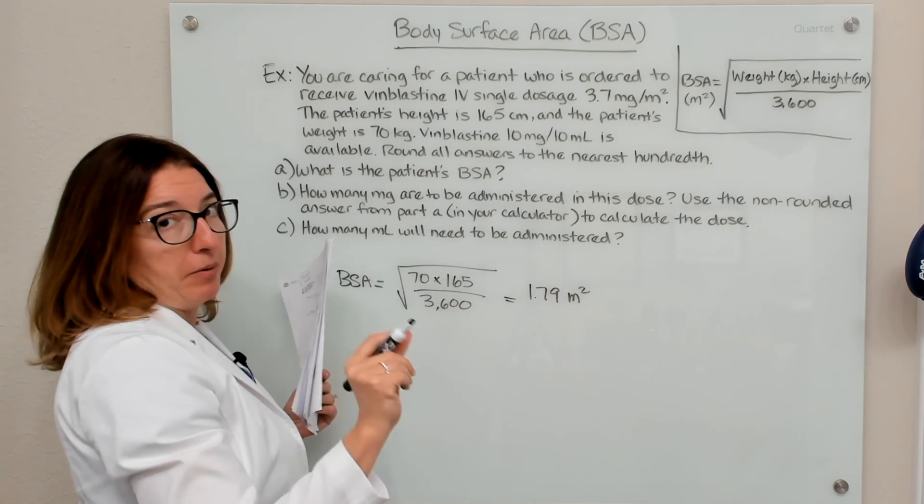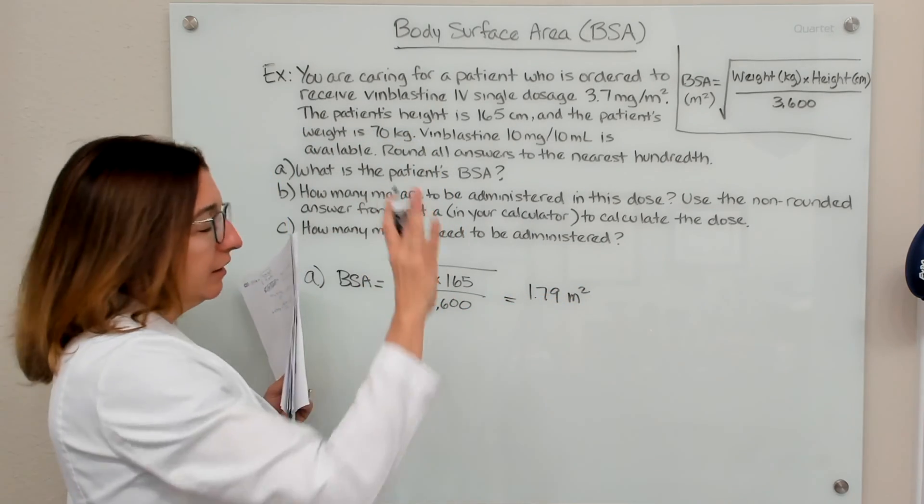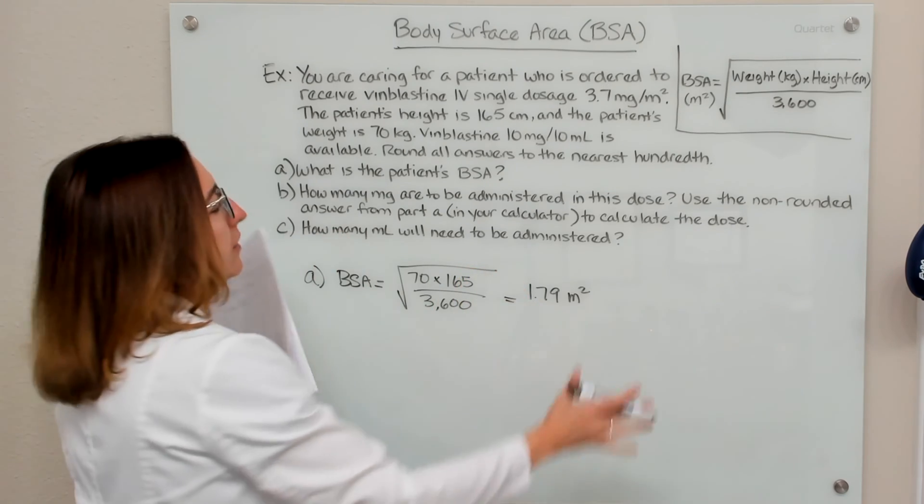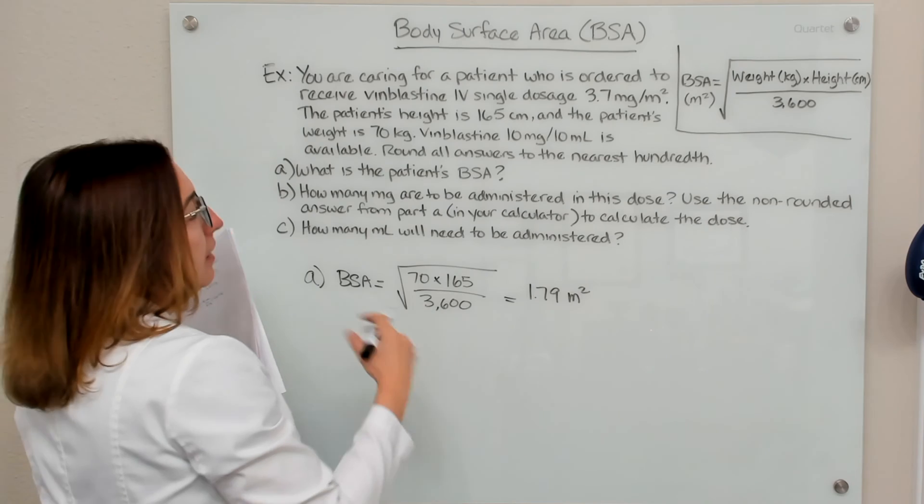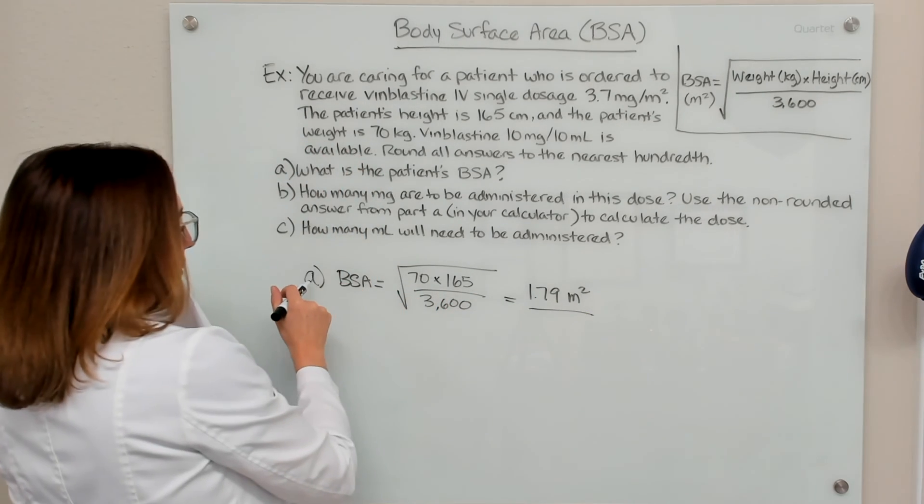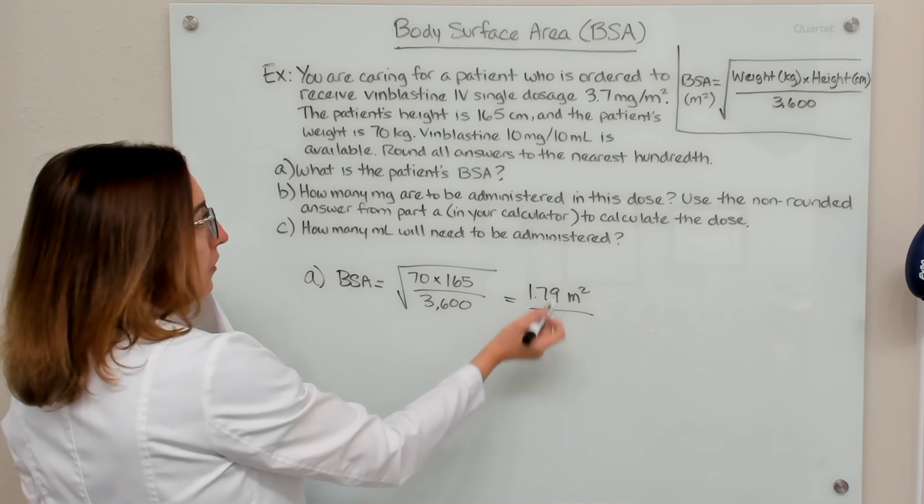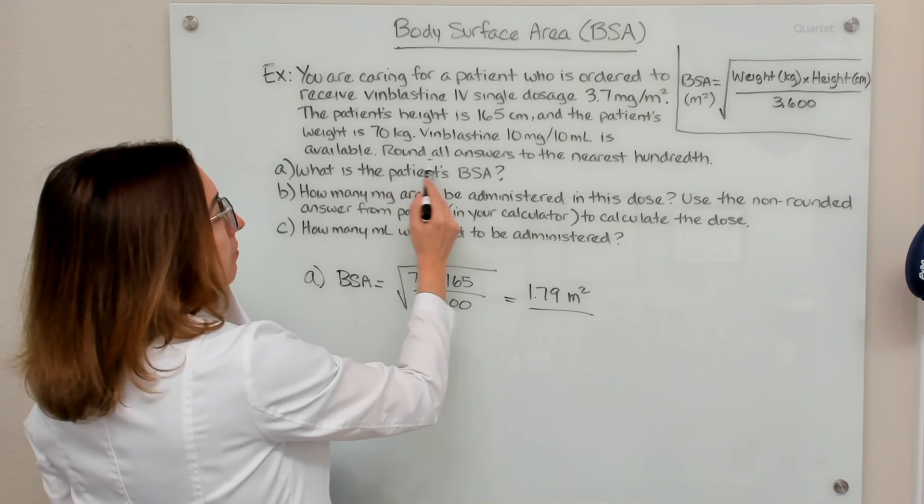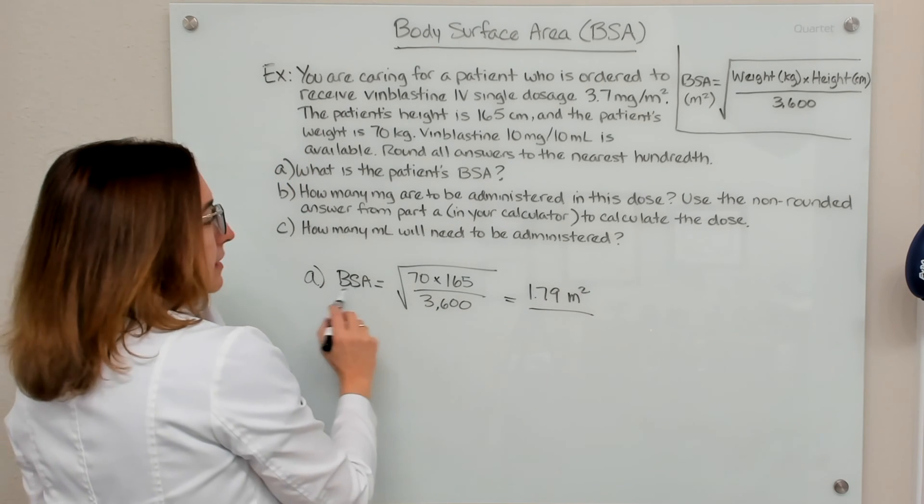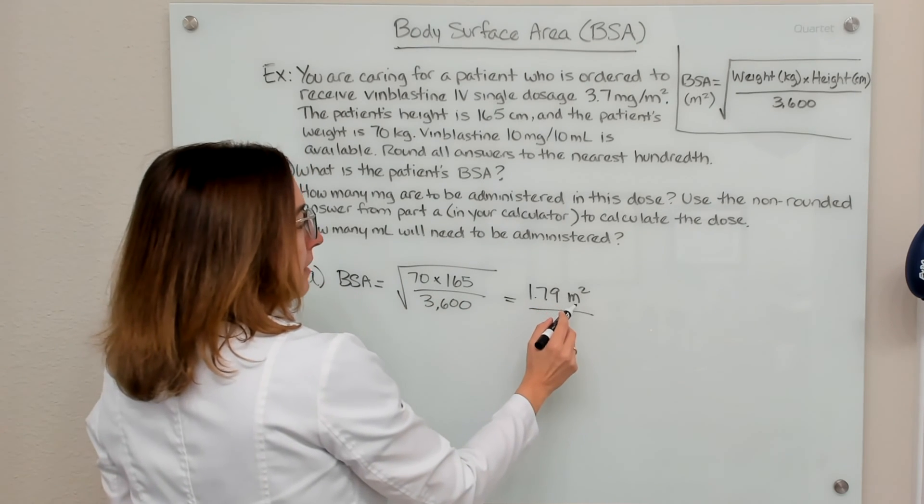So keep that number in your calculator, do not clear that out, because we're going to need the full number in your calculator to work through part B. But we are going to round this particular answer to the nearest hundredth for the instructions here. So the patient's BSA is 1.79 meters squared.